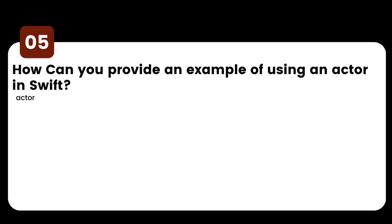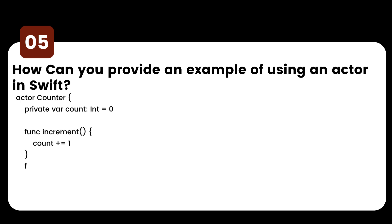How can you provide an example of using an actor in Swift? The Counter is defined as an actor using the actor keyword, which means access to its state — in this case, the count variable — is isolated and protected. The actor has a private variable count initialized to zero. The increment method is used to increment the count variable by one. Since the actor ensures serial access to its state, this operation is safely performed even in a concurrent environment.